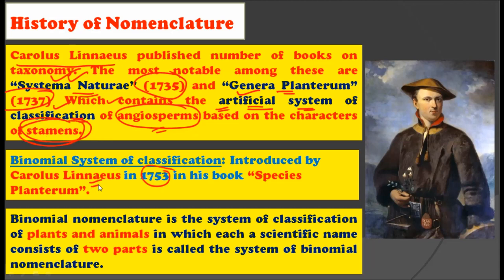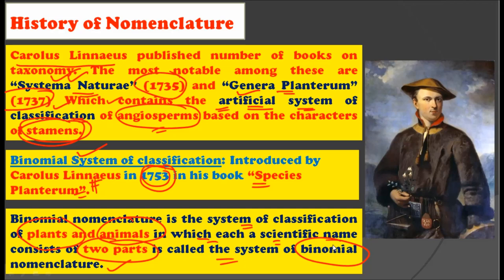The most notable work of Carolus Linnaeus comes in his book Species Plantarum, published in 1753, in which he gave the binomial system of nomenclature. In this binomial system, the scientific name consists of two parts — that is why it is called binomial nomenclature — and it includes not only plants but also animals. Carolus Linnaeus was the first to classify and name plants and animals, and that is why he is famously called the father of taxonomy.